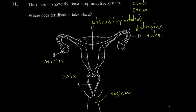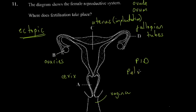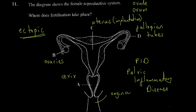Sometimes the fetus can grow in the fallopian tube or somewhere else — this is called ectopic pregnancy. Ectopic simply means abnormal. A zygote developing in the fallopian tube is not viable. This can occur in women who have a condition called PID — pelvic inflammatory disease — and is also associated with smoking. So don't smoke. Fertilization normally happens in the fallopian tubes.